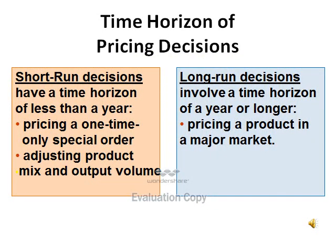Regarding the time horizon of pricing decisions, there are short-run decisions and long-run decisions. Short-run decisions have a time horizon of less than a year. For example, pricing a one-time only special order or adjusting product mix and output volume. For instance, if you want a refrigerator with 5 feet — and there is no standard refrigerator with 5 feet — the factory must make this special order. This needs a pricing decision in the short-run.